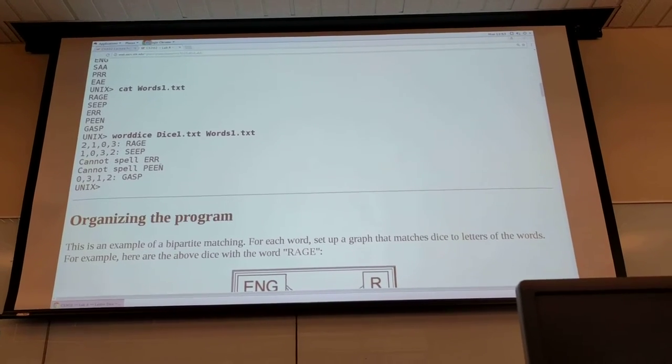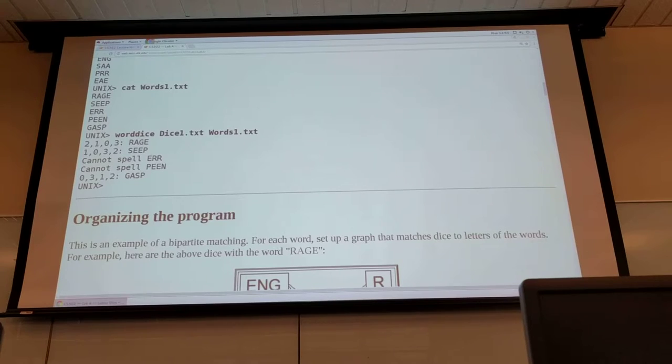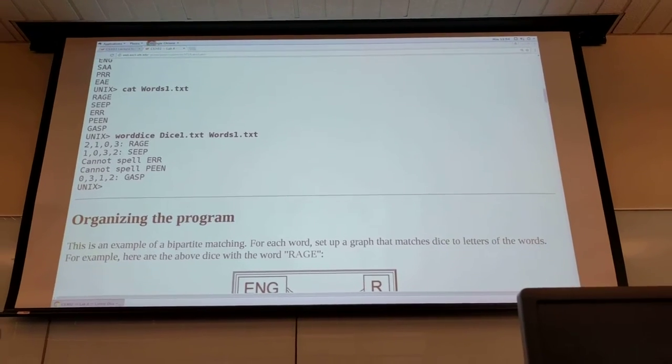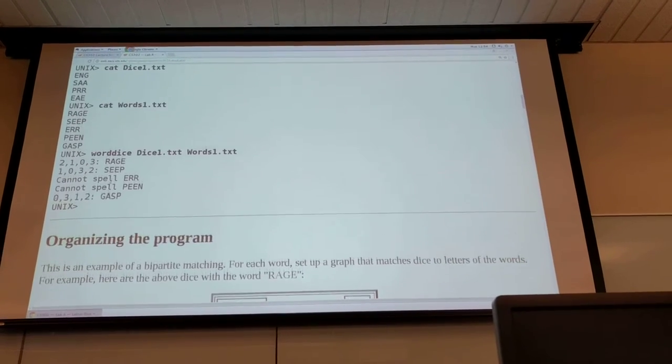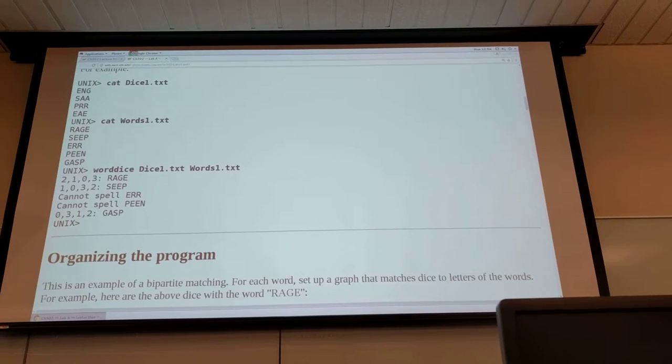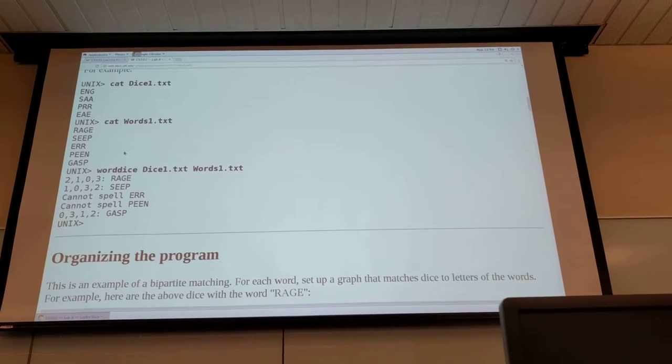Similarly you can spell seep however you cannot spell E-R-R or P-E-N. You can't spell gasp. Are there any questions on how the program matches up like what it's supposed to do with the matching of the die to the words?